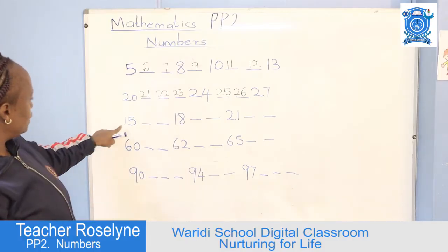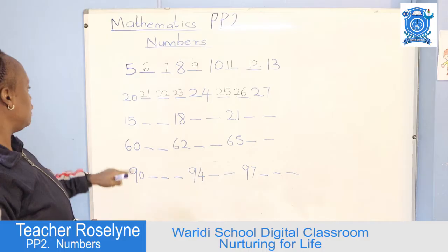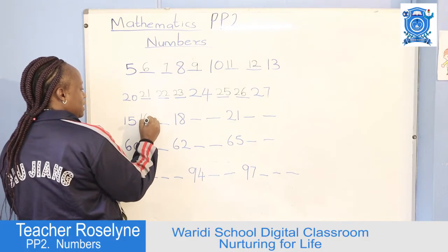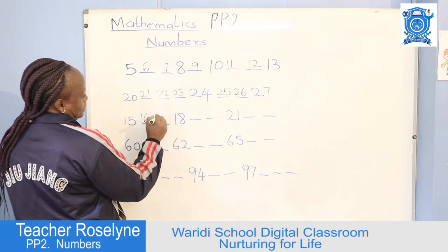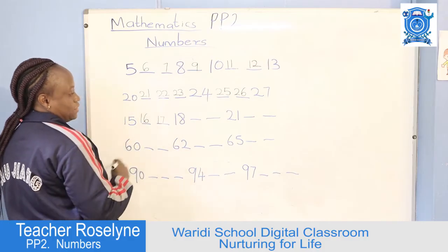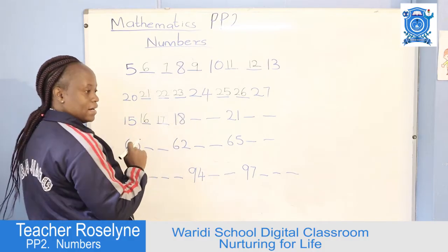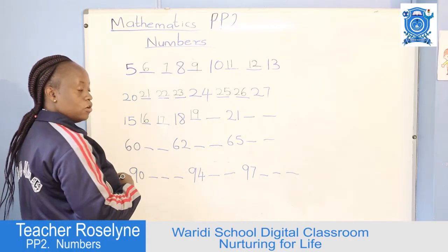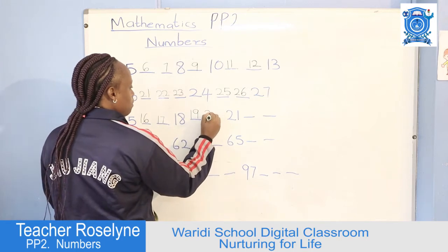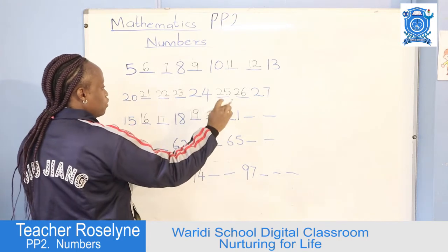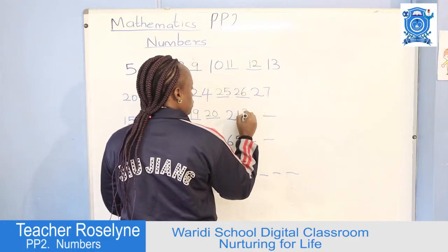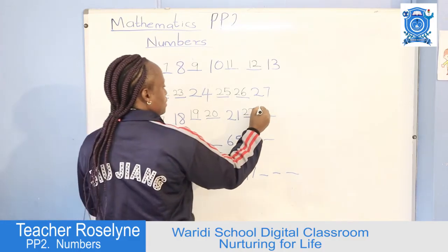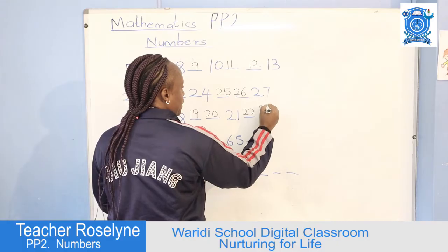Now let's move on to the second line. This is number 15. From 15 we go to 16 — 16 is 1 and 6. From 16 it's 17. From 17 it's 18. From 18 we go to number 19. From 19 we go to 20. We go to number 20, then 21, 22 — that's 2 and 2. From 22 it's 23 — 2 and 3.